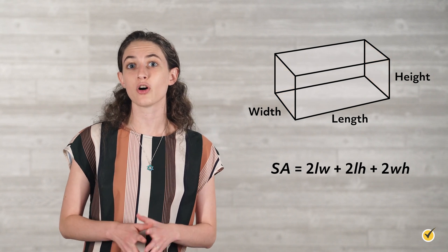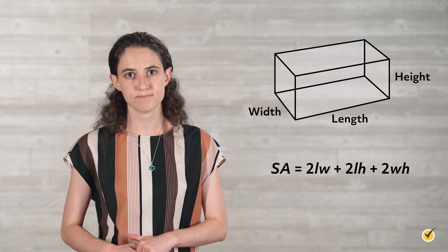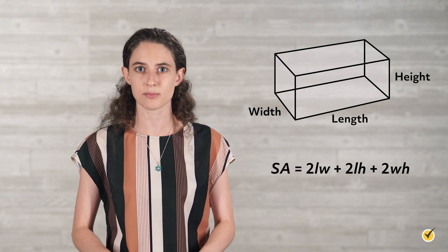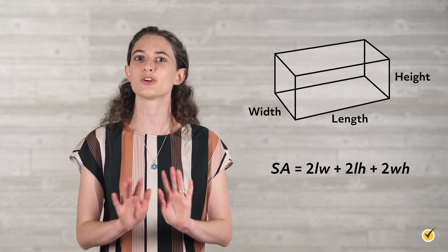So the formula is simply finding the area of all six sides of the prism, two at a time. That means that if we ever forget the formula, we can simply find the area of each side individually and add them all up. It takes a bit longer, but it totally works.